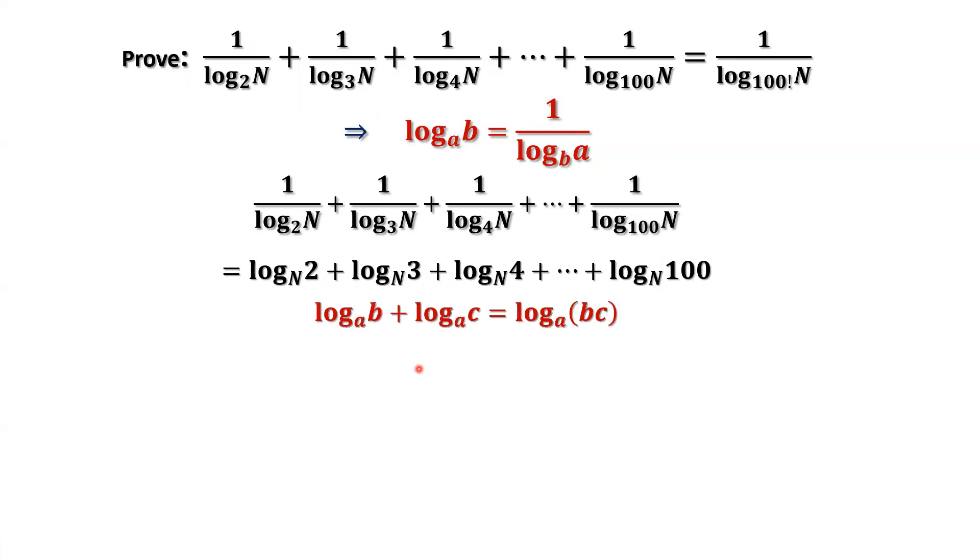Here is the basic property of log function: The sum of two log functions to the same base equals log of the product of the two numbers to the same base. Apply this result to get log of 2 times 3 times 4 until times 100 to the same base n.